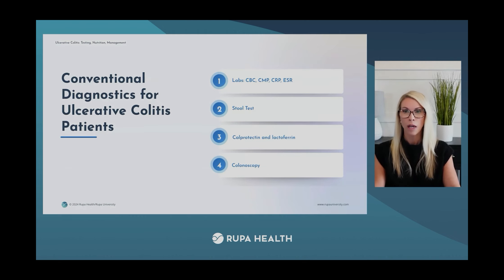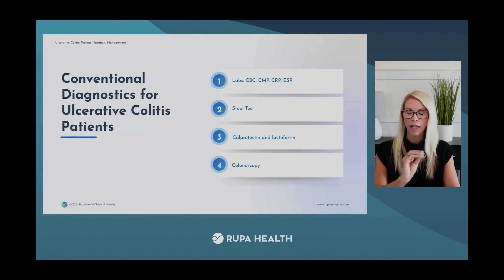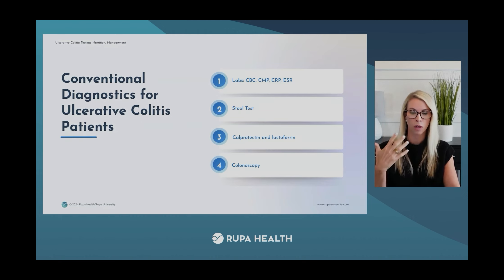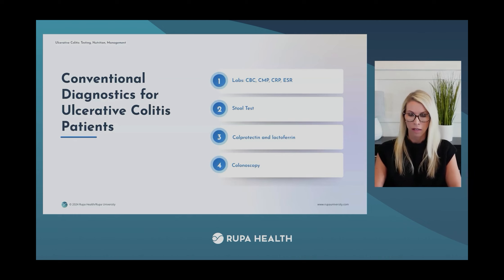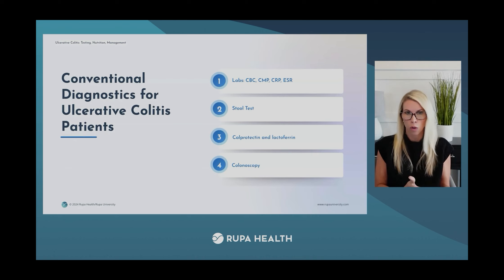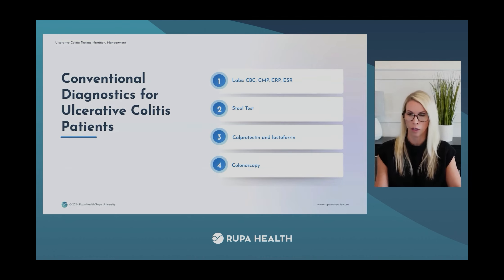Fecal calprotectin and lactoferrin are proven sensitive biomarkers for IBD — elevated in active disease due to increased inflammation and white blood cell activity. A colonoscopy with biopsy is the best way to confirm UC and distinguish it from Crohn's. Most patients will have undergone a colonoscopy, or you'll be referring them for one.